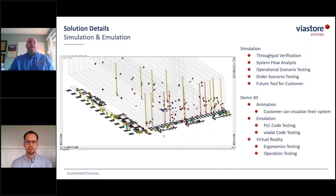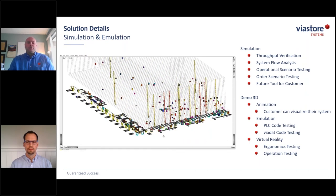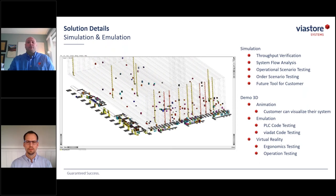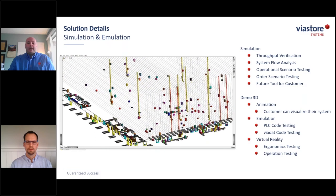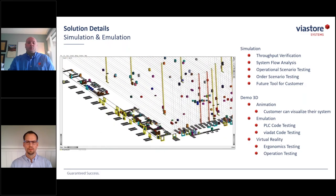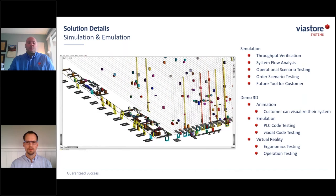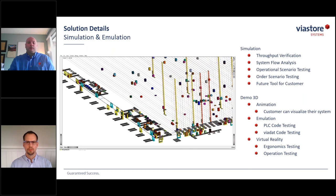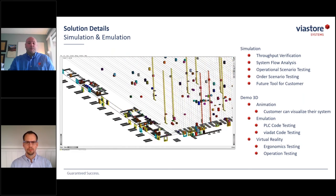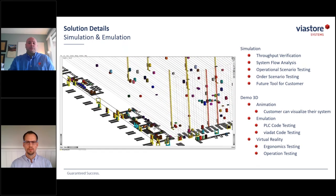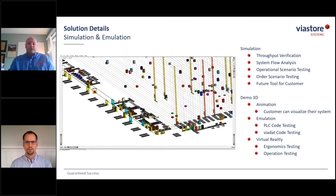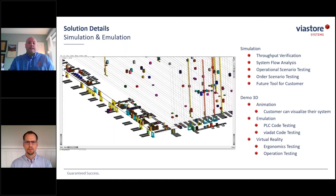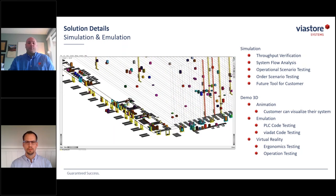The second tool we use is Demo 3D. In the sales and design phase we use it as an animation tool, and we also use it for emulation, which allows us to take the actual PLC code and WMS code and run the system to perform commissioning and debugging before we arrive on site. This makes for an easier startup with fewer bugs. Demo 3D also allows us to create virtual reality environments for operator stations, so operators can test ergonomics and operator efficiency before the system is built.